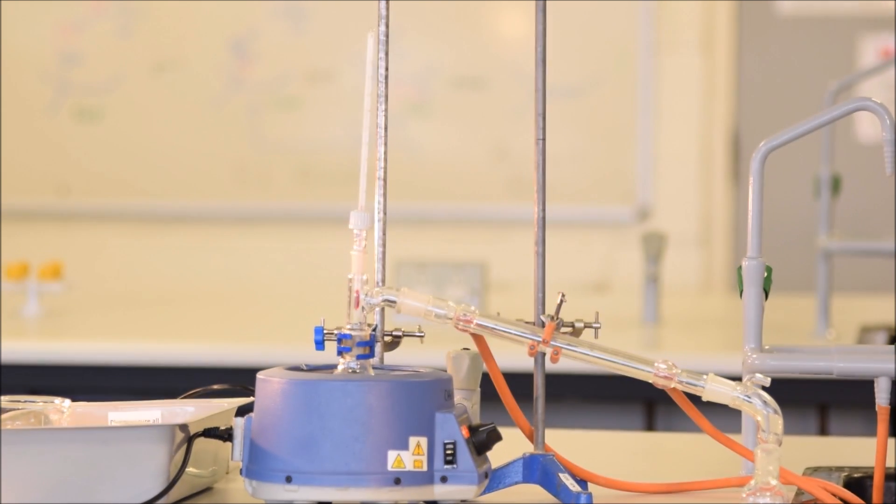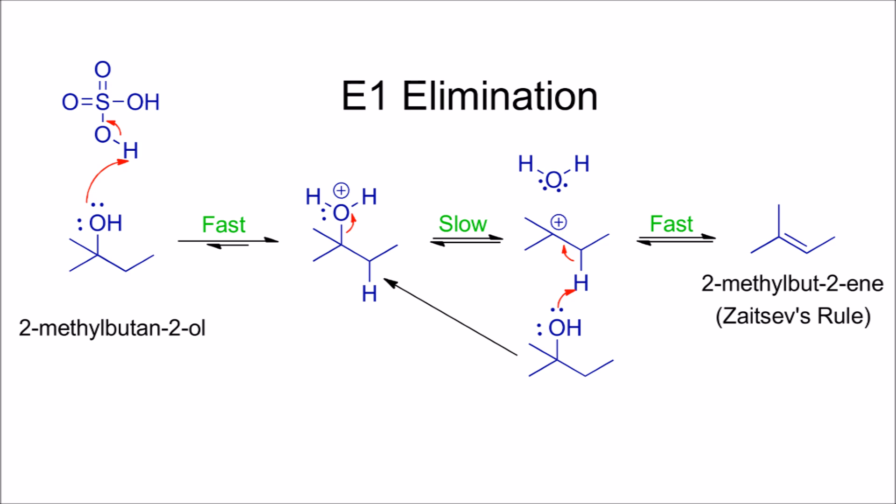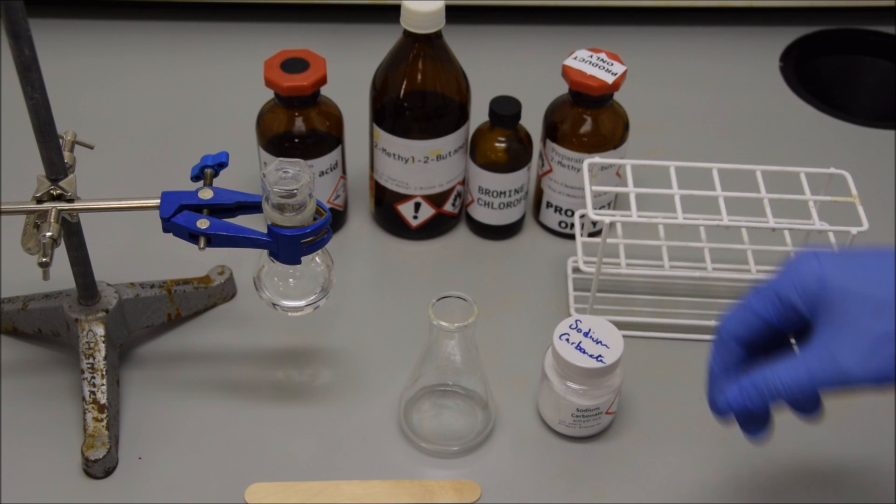Before we do any tests on our product, or any more work on our product, let's look at what we've made. What have we done? We've taken an alcohol and we've turned it into an alkene. We know there are several important differences between alcohols and alkenes. Alcohols are polar, alkenes are non-polar. Alcohols, or our alcohol in this case, is saturated, and our alkene will be unsaturated. You may want to pause at this point and have a closer look at that mechanism, but for now, we're going to continue on.